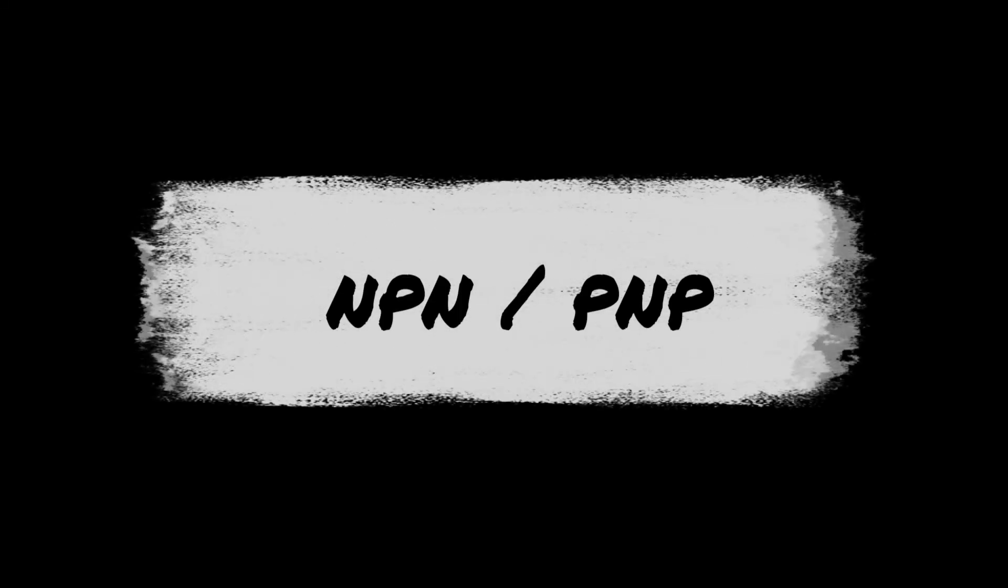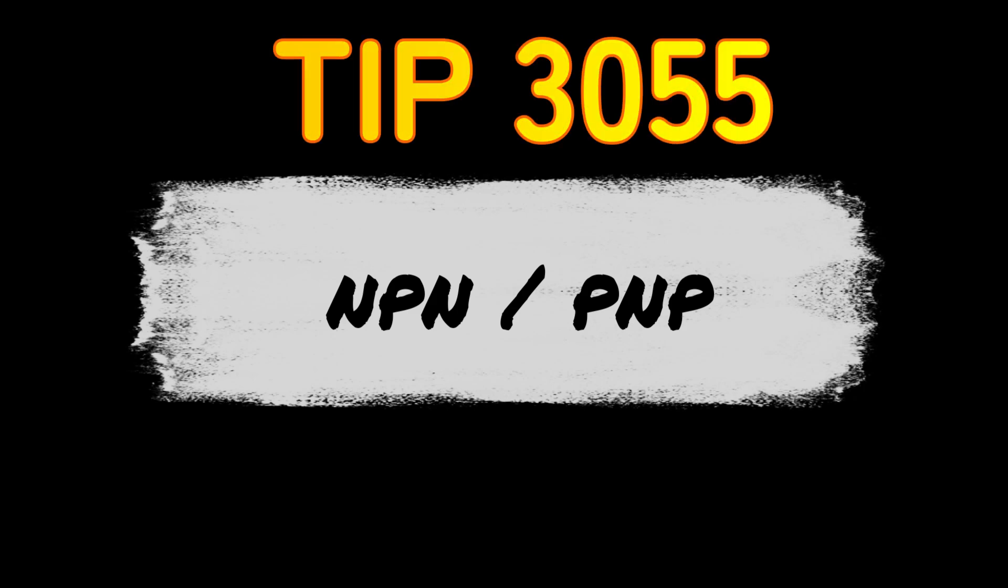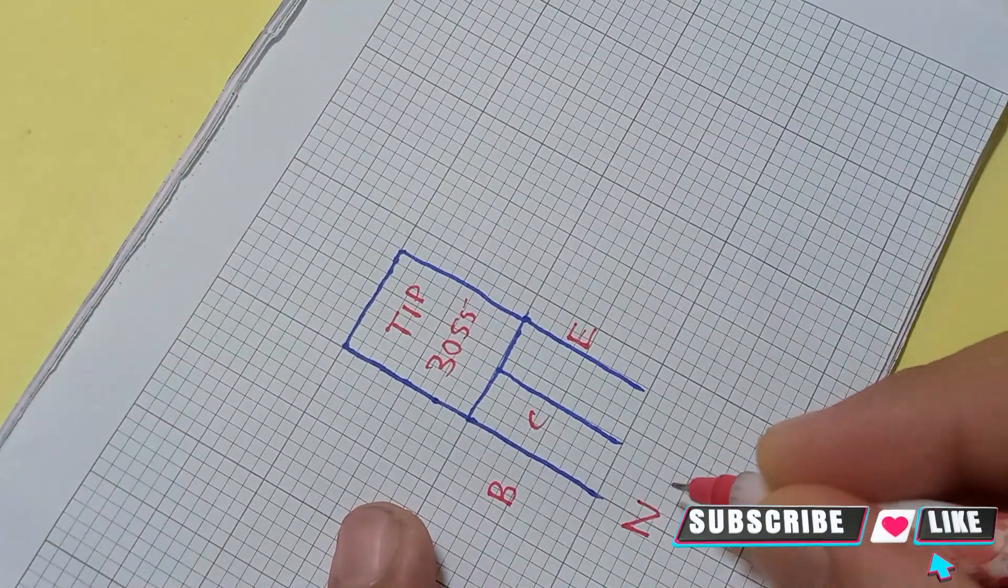Now let's move towards the first question: is TIP3055 an NPN or PNP type transistor? The answer is NPN.